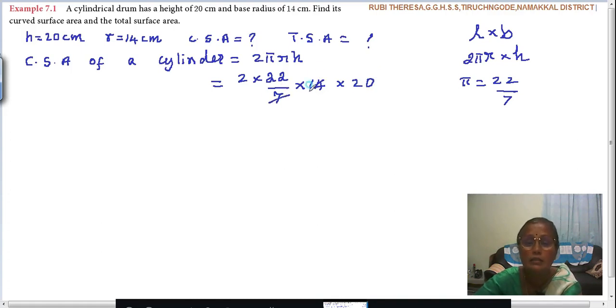So 1 seven is 7, 2 sevens are 14. Next one is 2 into 22 into 2 into 20. So, formula - this is formula. This is substitution. This is calculation part.